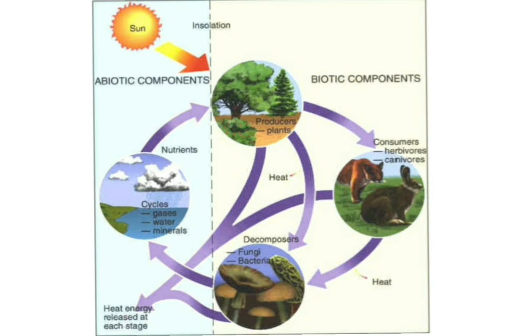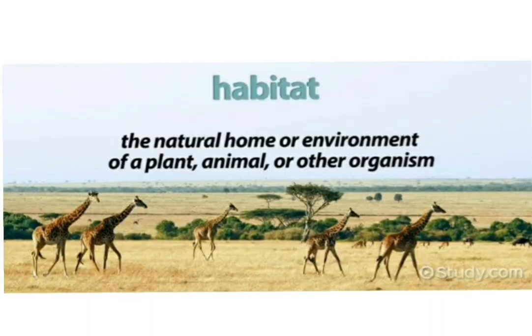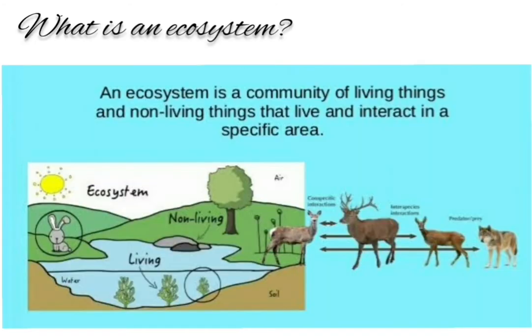The components interact with each other in an organized manner in an environment. This interaction helps the organism to survive and evolve. The place where an organism lives is called its habitat. It is the natural environment in which a particular species lives — a place where an organism can find space to live, food, shelter, protection, and mates for reproduction.